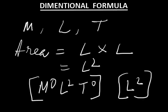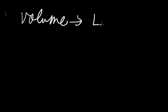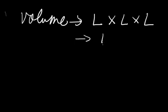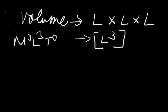In the case of a dimensional formula, no denominator can be used. For example, volume equals length into breadth into height, so volume is three-dimensional: length × length × length, equal to L cubed. The dimension of volume is L cubed, or M⁰ L³ T⁰, and in short form, L cubed.